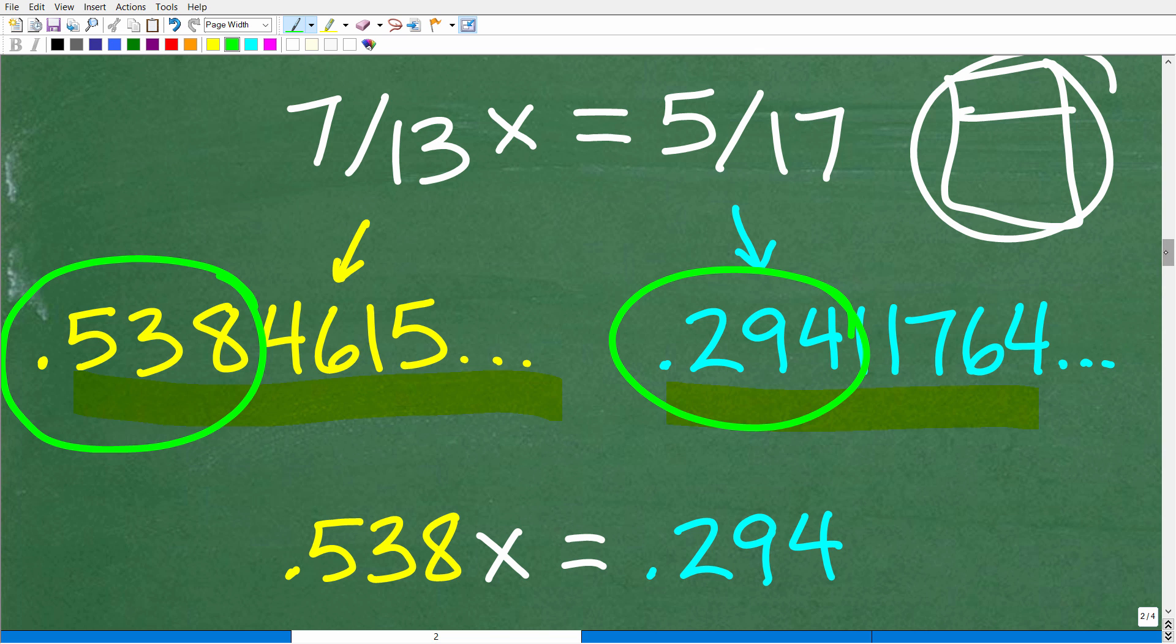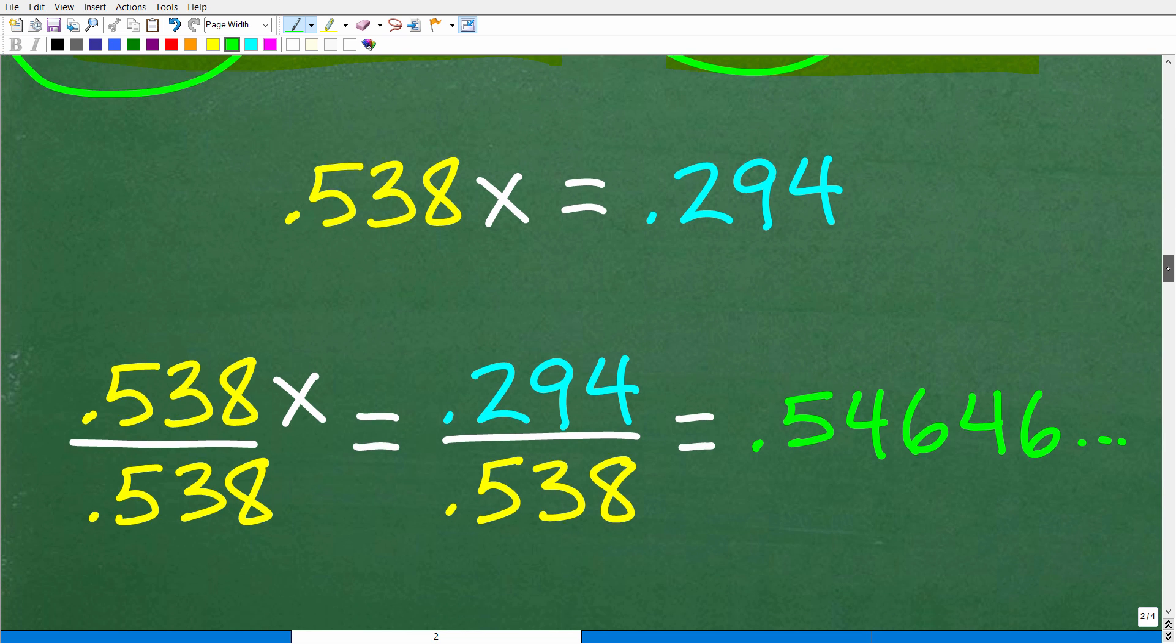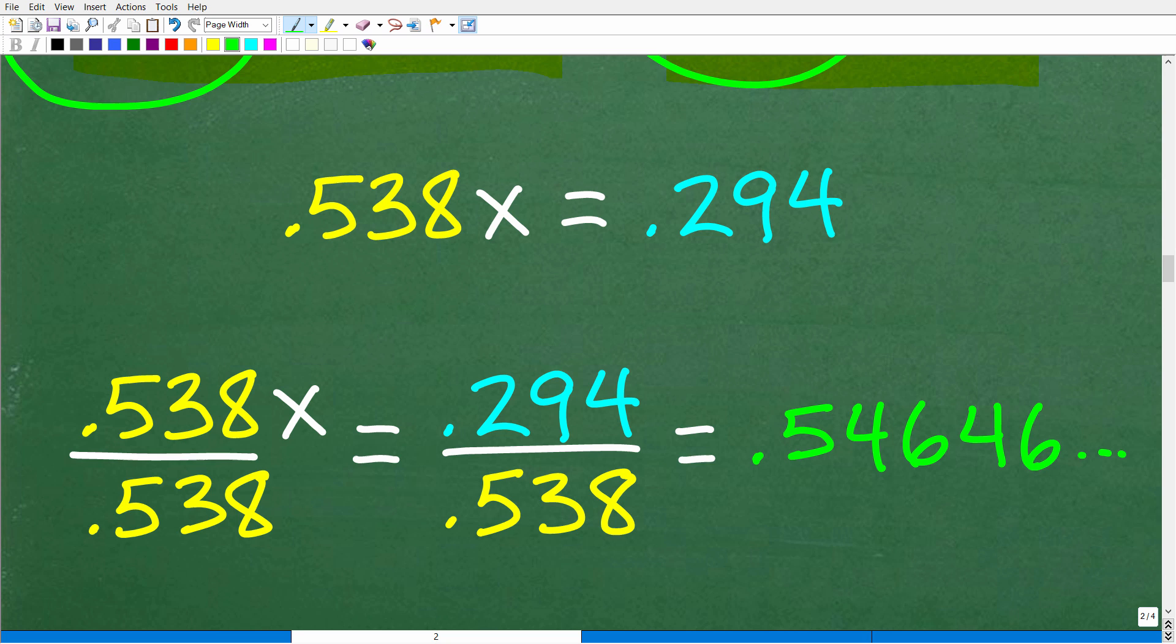But you don't want to do it this way because, obviously, it's pretty easy to solve these equations with fractions. But let's go ahead and just finish this equation out with these decimal estimates. So, if I have 0.538x is equal to 0.294, so to divide, or to solve for x, I'm going to divide both sides of the equation by 0.538. So, we've got 0.294 divided by 0.538. Again, I did say you can use your calculator. And when you do this, you're going to get another decimal, and it's going to go pretty far, 0.5464, on and on, on and on.